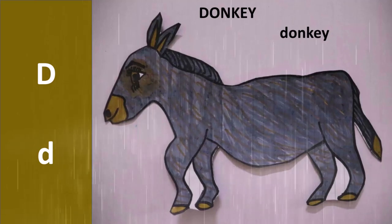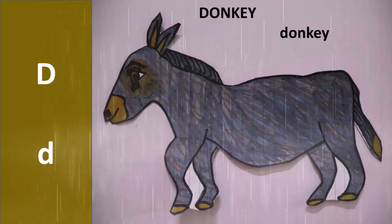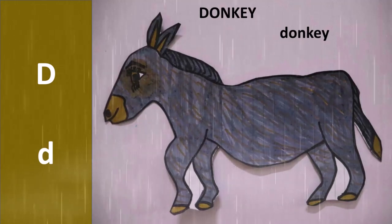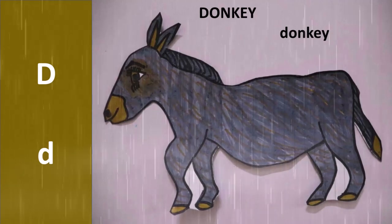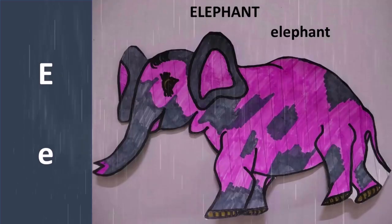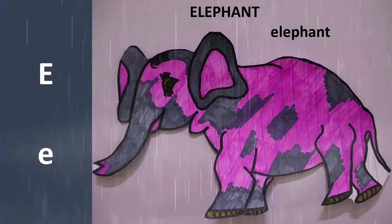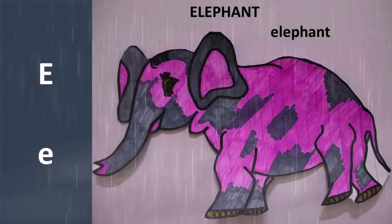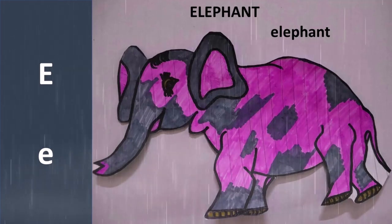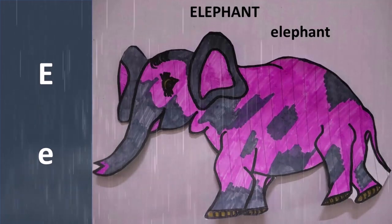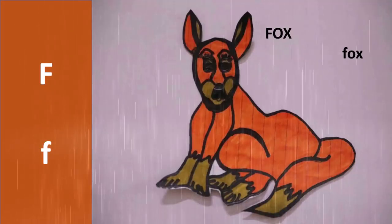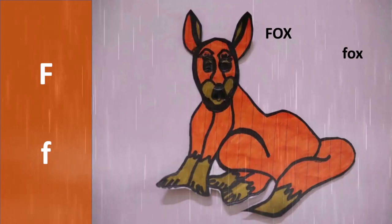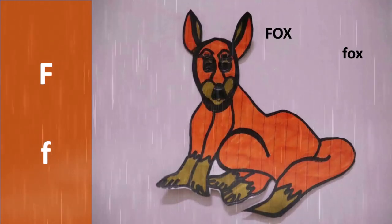Donkey. D is for Donkey. Elephant. E is for Elephant.